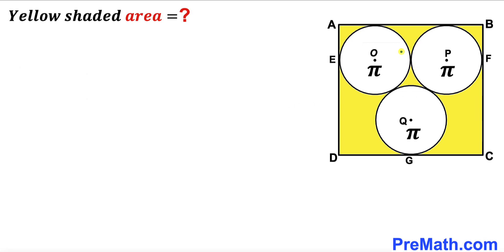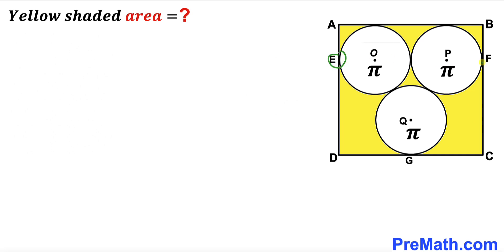Welcome to PreMath. In this video we have three identical circles fully inscribed in a rectangle ABCD, such that the area of each circle is π square units. O, P and Q are the centers of these circles, whereas points E, F and G are the points of tangency. Our task is to calculate the area of the yellow shaded region.